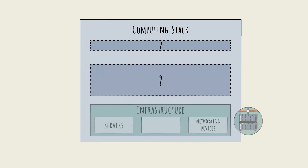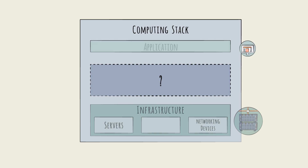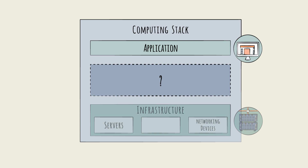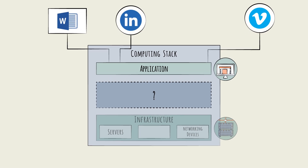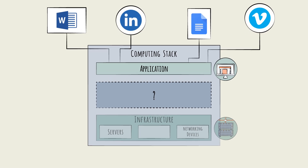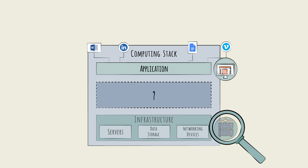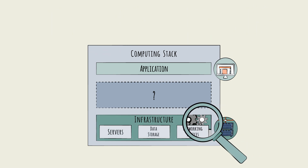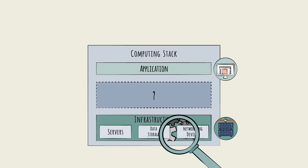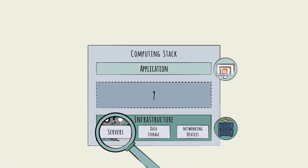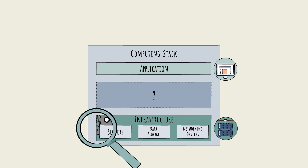At the very top of the stack is the application layer. This is the layer that end users interact with. For example, when using a social media app, Microsoft Word, or Google Docs, we are engaging with the application layer directly. Of course, somewhere beneath this, the infrastructure layer is working hard to store and process information.